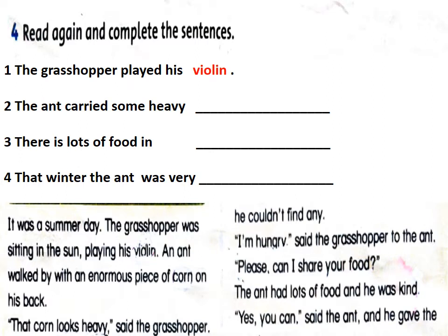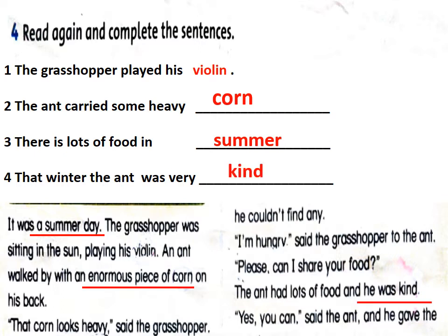In this part, you must read the story silently and find some information to complete the sentences. Number one is already done, so we start with number two. The ant carries something heavy on his back — corn. Good. Number three: There is lots of food in summer or winter? Summer. Good. Number four: That winter, the ant was very — kind. Good.